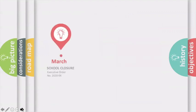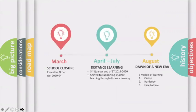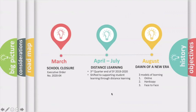But before we start, let's go over a little bit of history of what transpired. Everyone remembers back in March there was a school closure executive order number 2020-04 which effectively cancelled schools. From April through July, the Guam Department of Education started shifting towards distance learning. We ended third quarter and started supporting student learning at home. We developed the home learning resource website and parents started teaching their children. And now August comes upon us and it will be the dawn of a new era, a brand new approach to education for all of us.